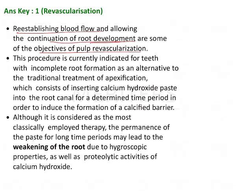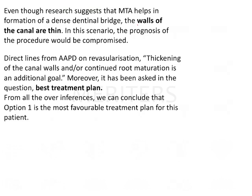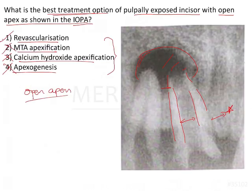MTA apexification is not as ideal as revascularization because placing paste in the radicular area and leaving the space for a long time leads to weakening of the root structure. Since the walls of the tooth are thin and the pulp space has enlarged, the prognosis with apexification would be compromised. Therefore, revascularization is the most ideal and best treatment plan, as it allows thickening of the canal walls, continued root maturation, and restoration of tooth vitality. The answer is revascularization.